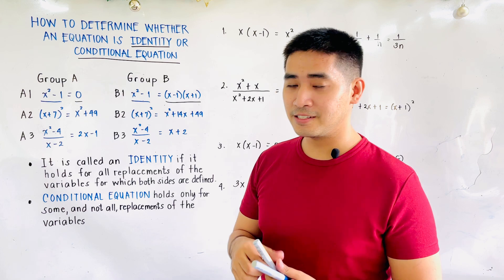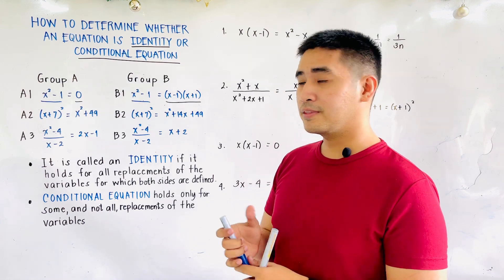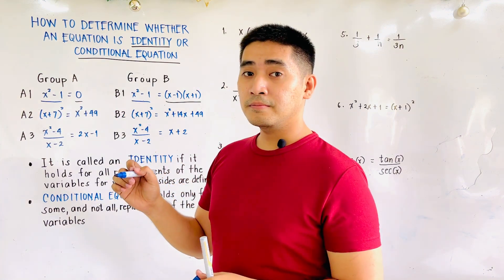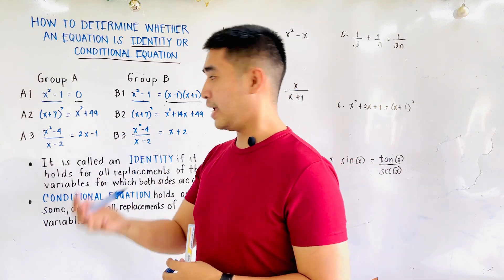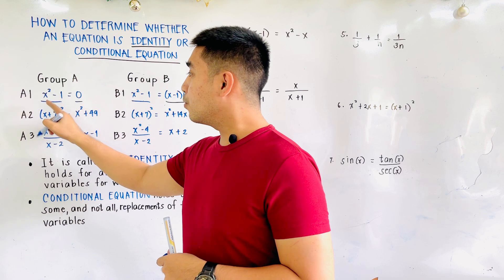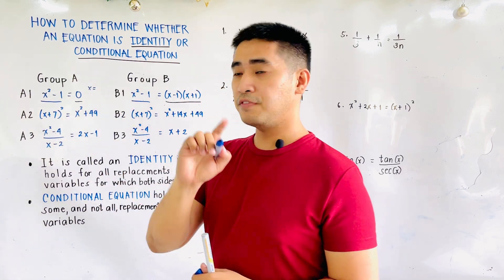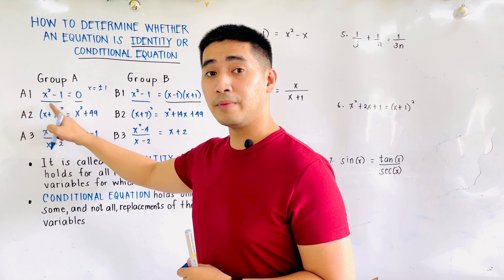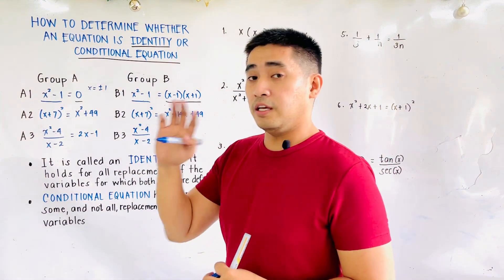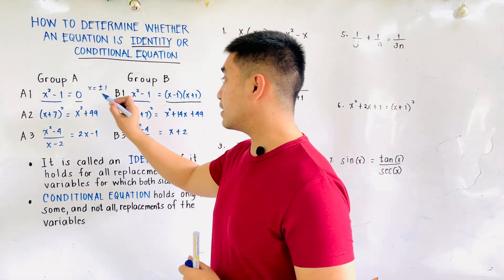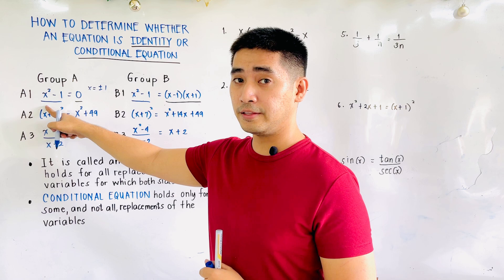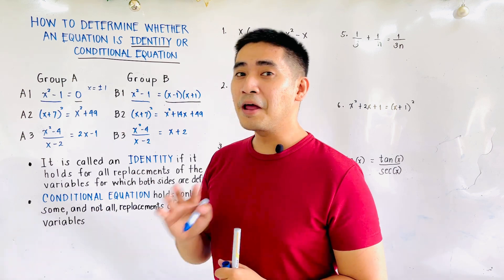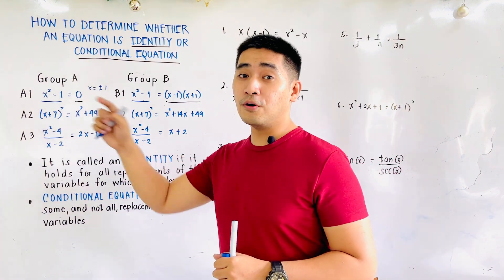What can we say about the two givens? The one on the left is not true for all the values. Therefore, it is only true when x is equal to plus or minus 1. If you substitute x equals 1, it becomes 1 minus 1 is equal to 0. But if you substitute other values, for example 2, it becomes 2 squared which is 4, minus 1 is 3. Is 3 equal to 0? No. Therefore, it is not true for all the values of x.